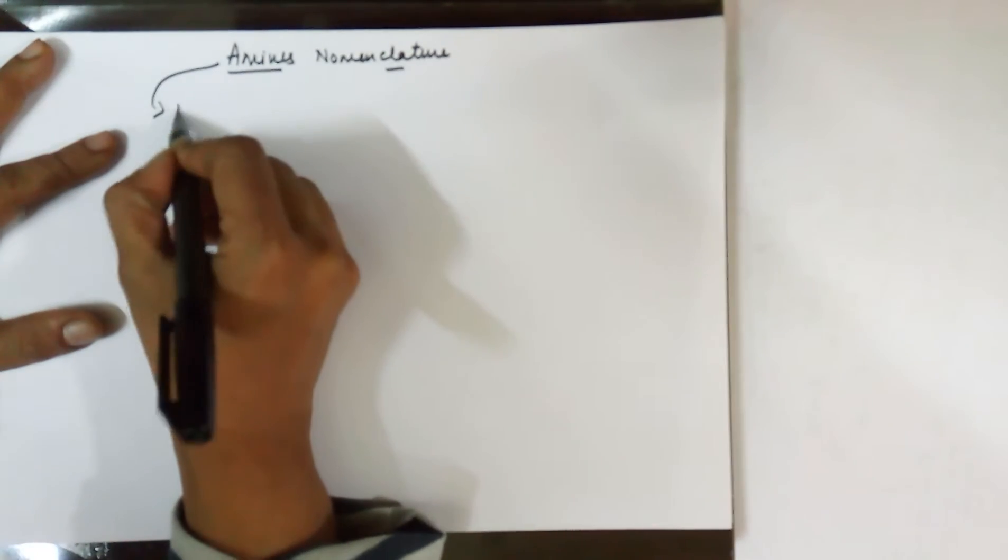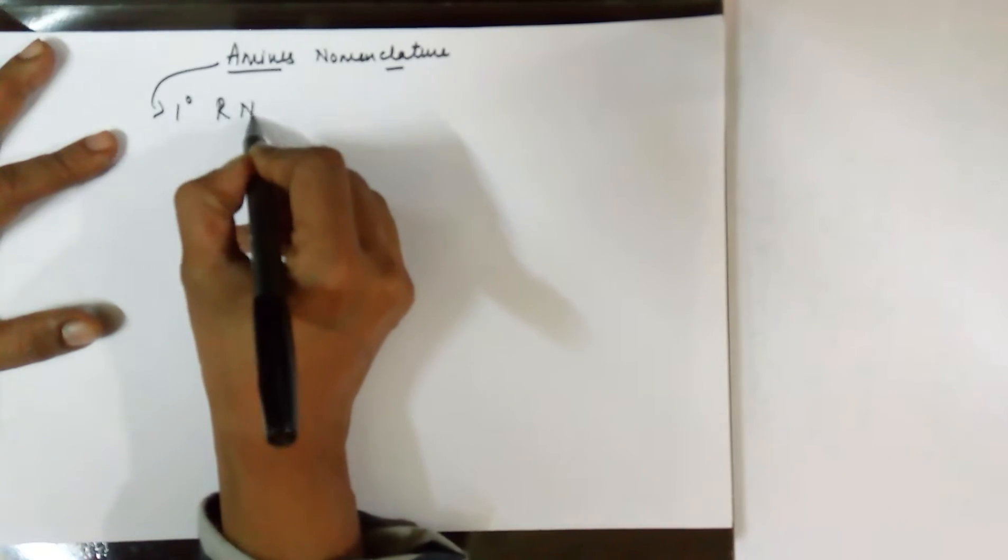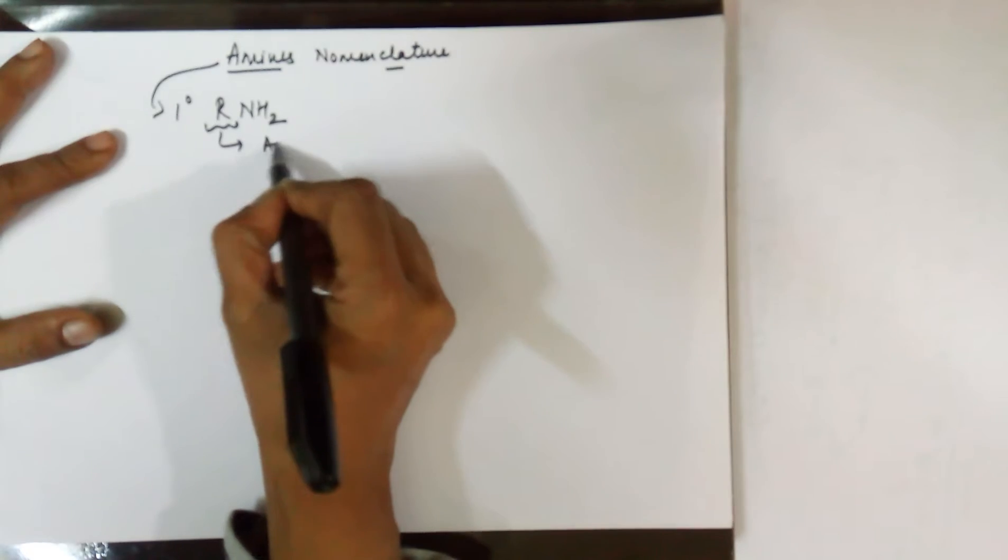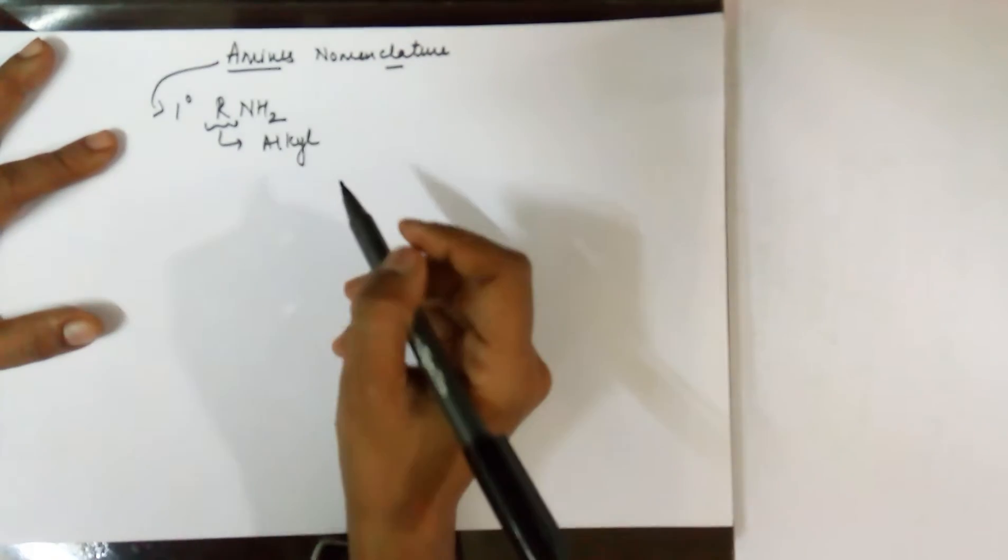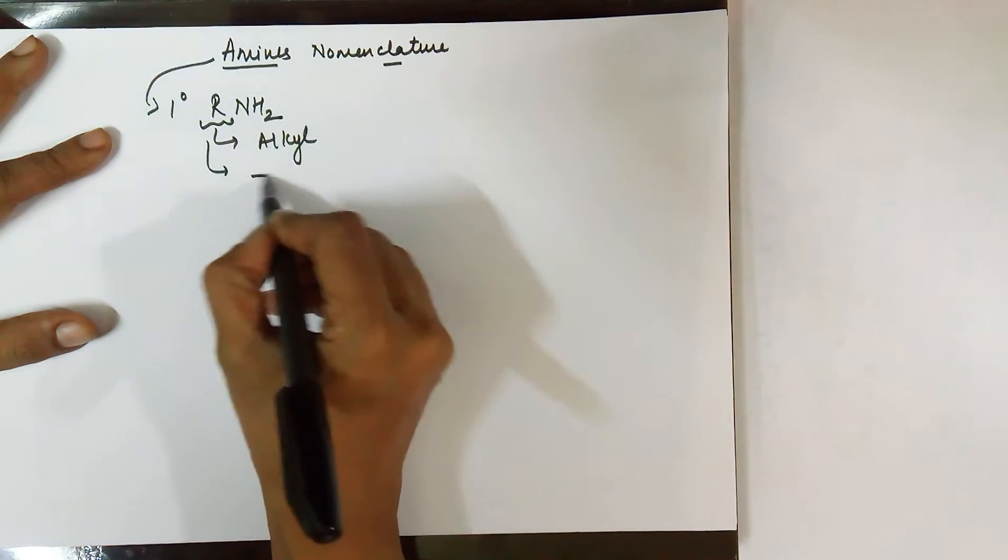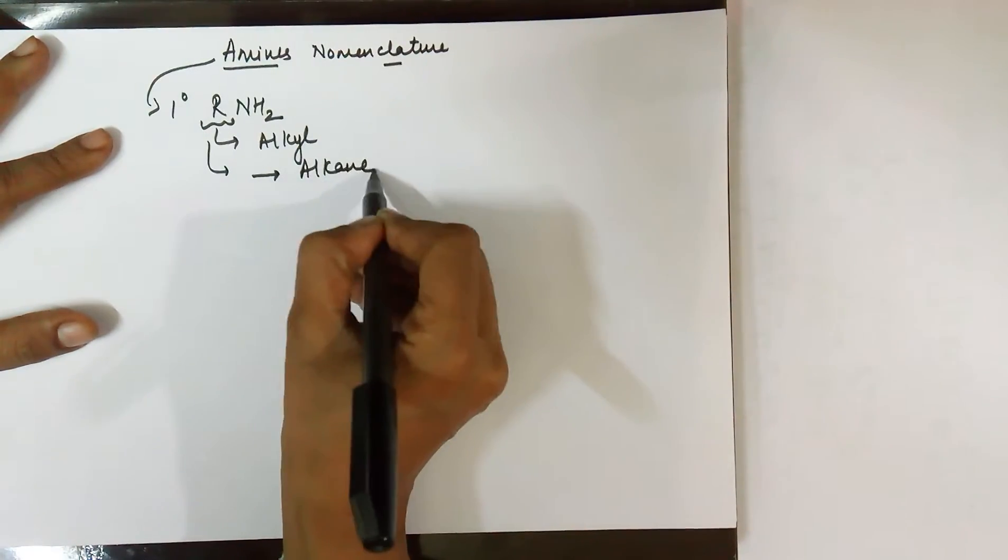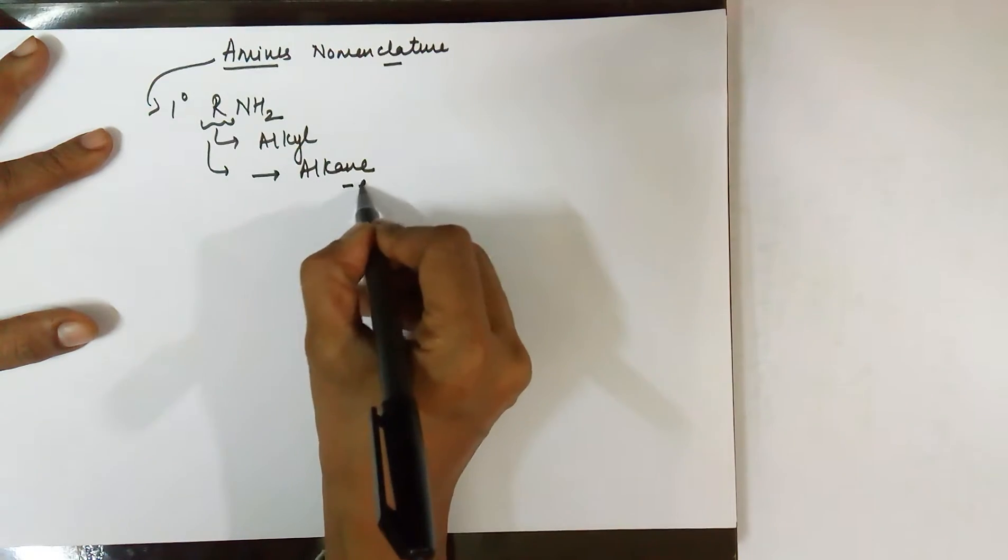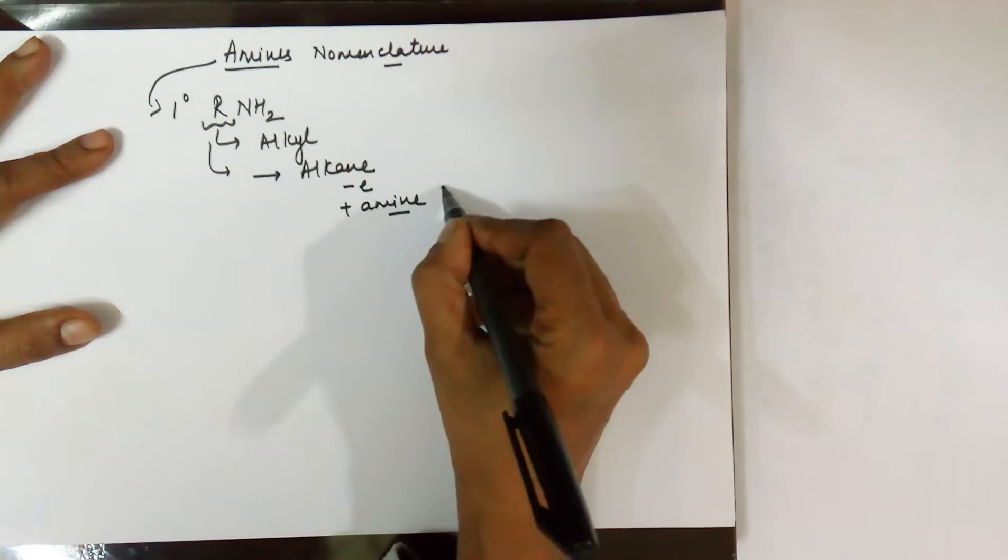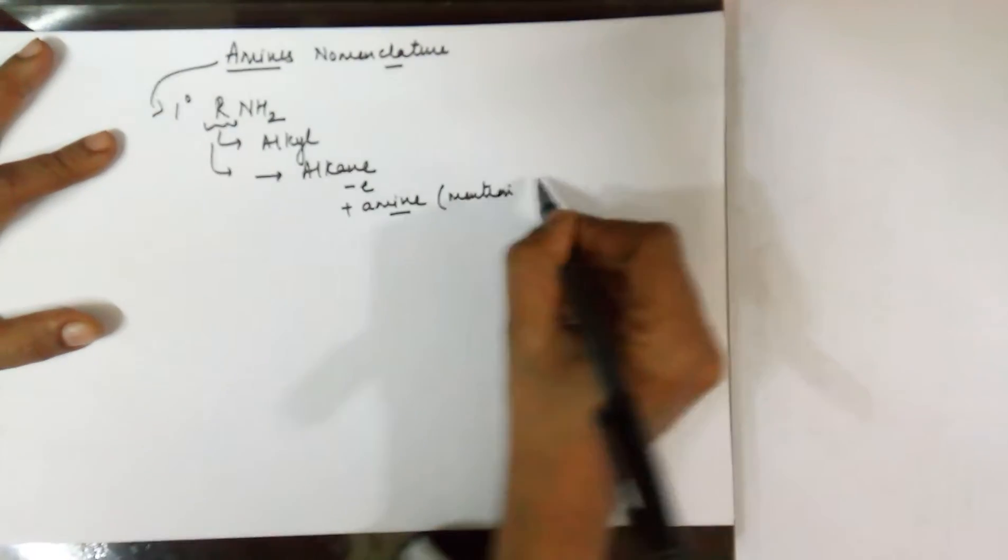Good morning viewers. In today's class, we'll be doing nomenclature of amines. I'm presently talking about 1° amines, that is R-NH2, where R is your alkyl group. You can count its carbons, give it a name as alkane, remove the 'e', add 'amine', and you need to mention the position of the NH2 group.